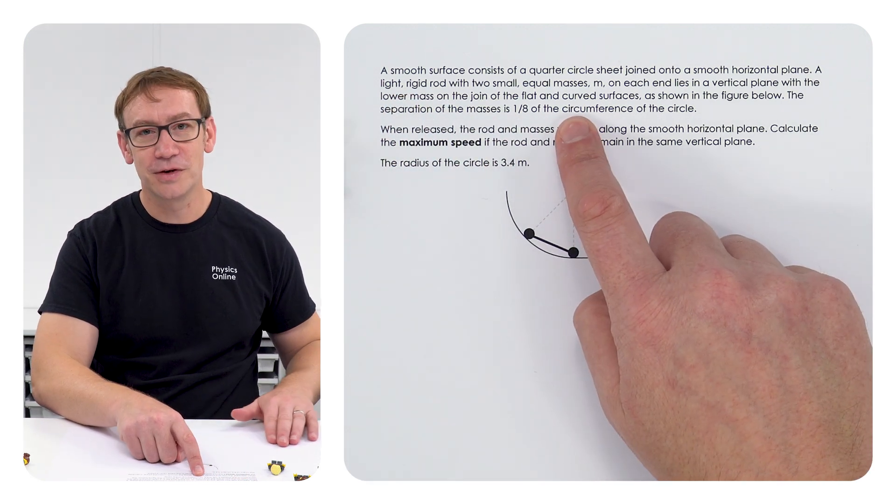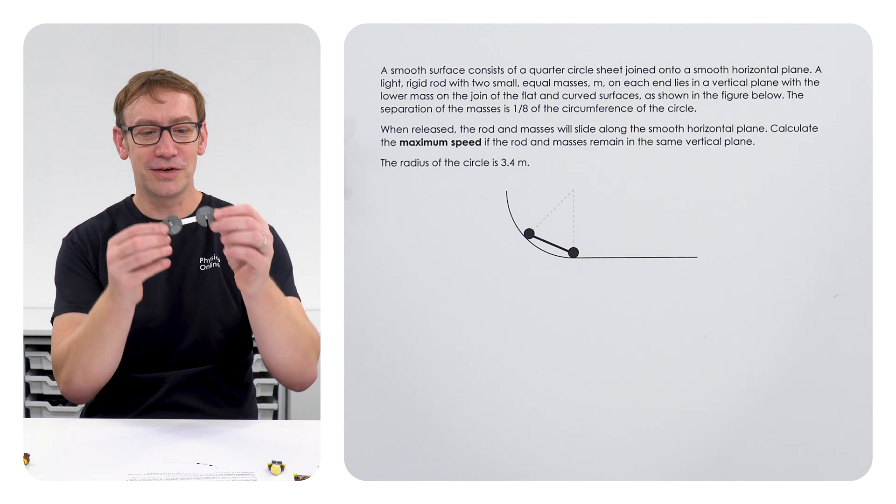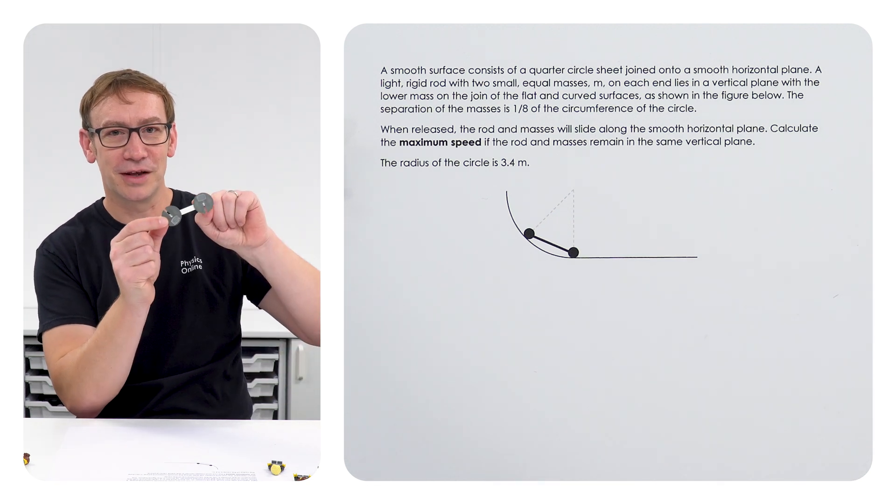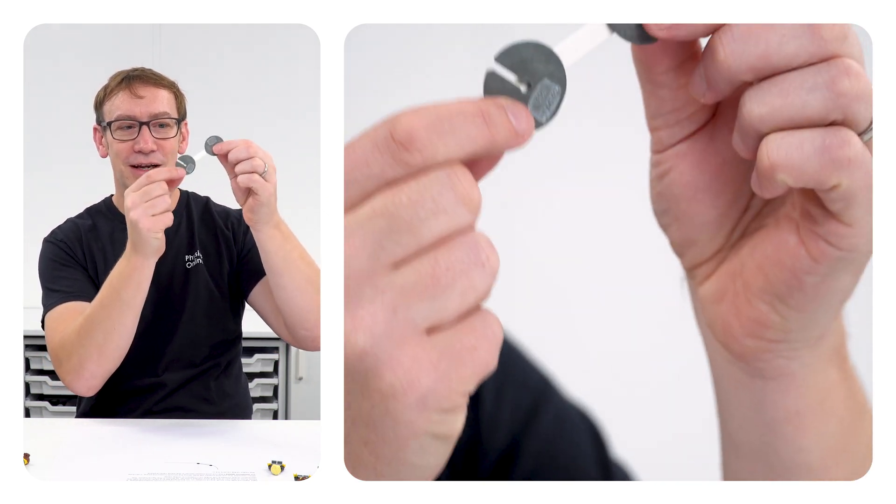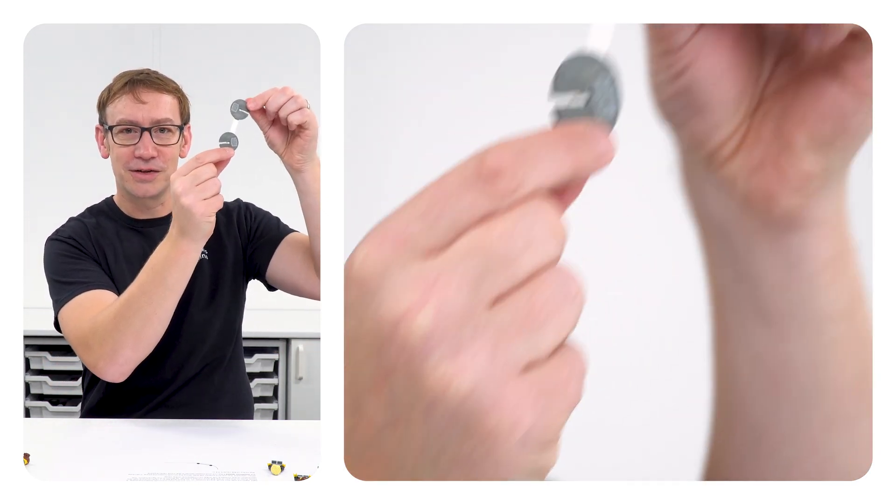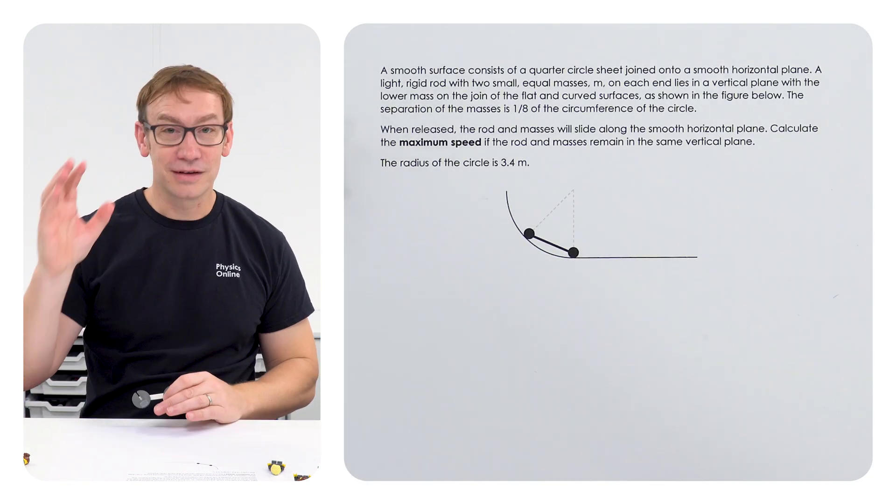We've got this light rigid rod with two small equal masses. I've actually made this to show what we're talking about. Because we've got this light rod we assume that has no mass, and that means all the mass is at each end.